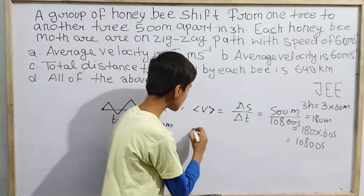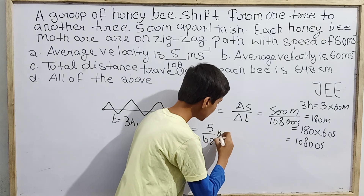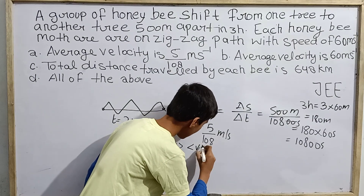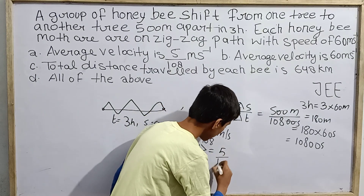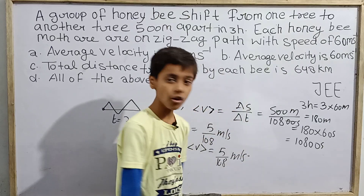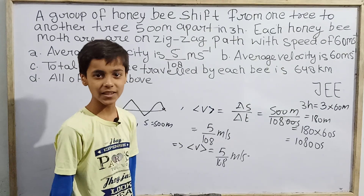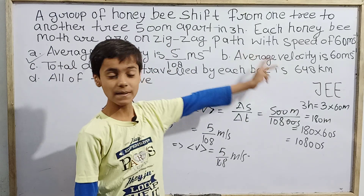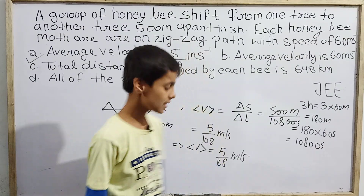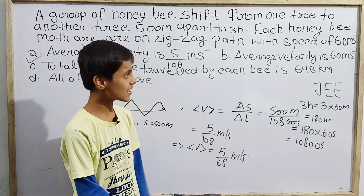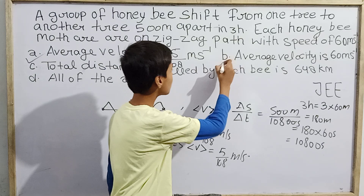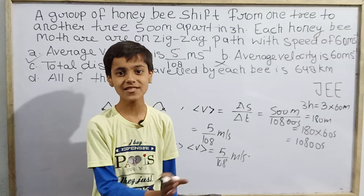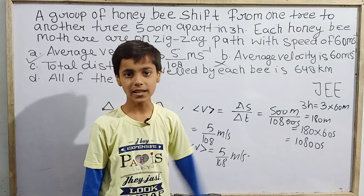So average velocity = 500 / 10,800 = 5/108 meters per second. This matches option A exactly, so option A is correct. Option B claims the average velocity is 60 meters per second, but 5/108 ≠ 60, so option B is incorrect.